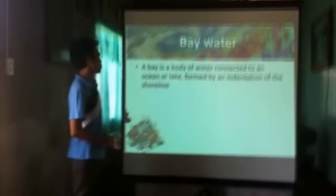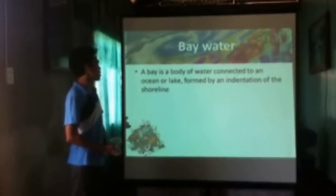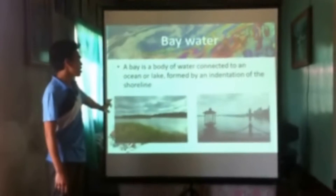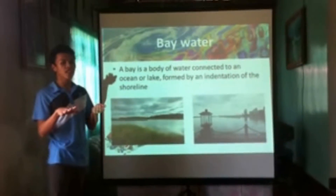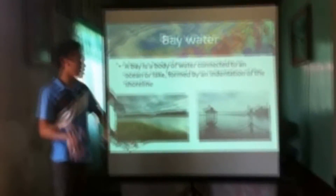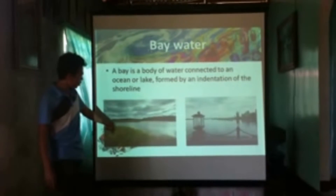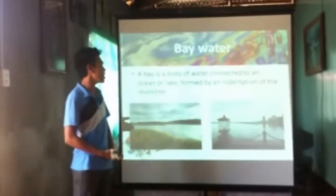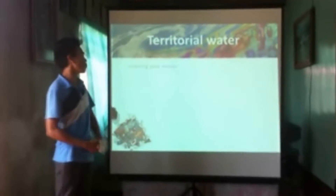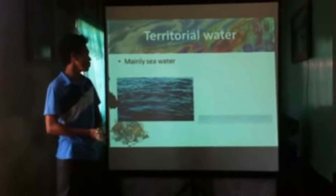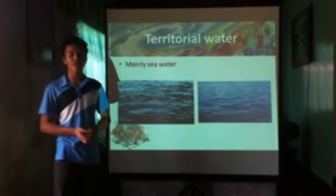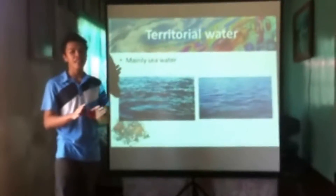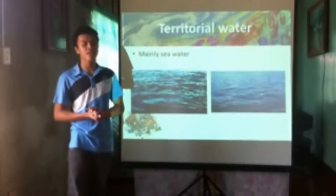Next is bay water. Bay water is a body of water connected to an ocean or lake, formed by an indentation of the shoreline. As we can see in this picture, the bay water is on the side of the sea or shoreline — where we can see the land and the water being connected. Next is territorial water, which is mainly seawater — the water we can see beyond a state, forming about 70% of the water that the world has.